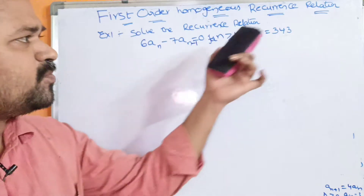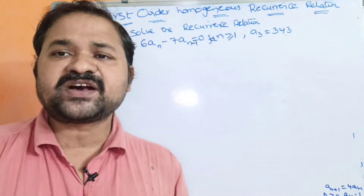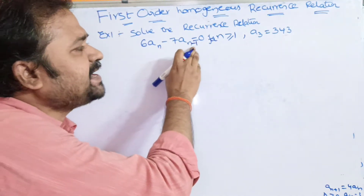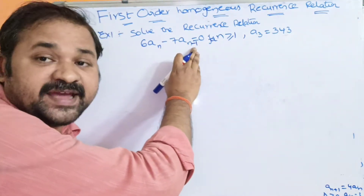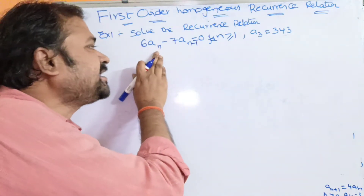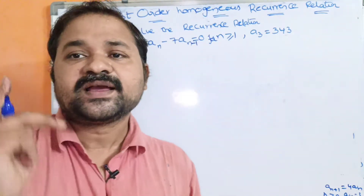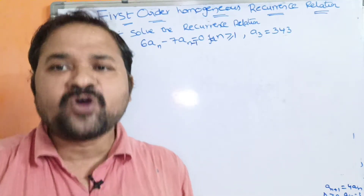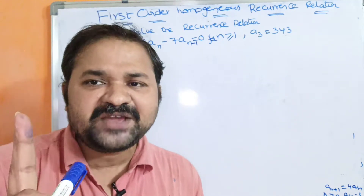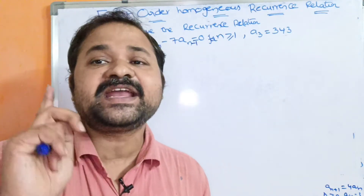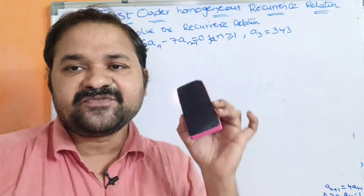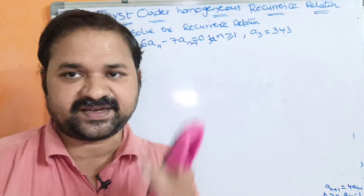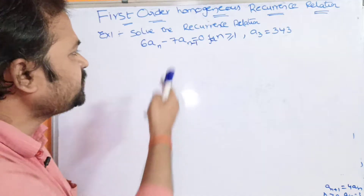What is a first-order homogeneous recurrence relation? First-order means we will have only AN and AN−1 terms. We can obtain AN with the help of only one term, that is AN−1. Let us convert this equation into first-order form.